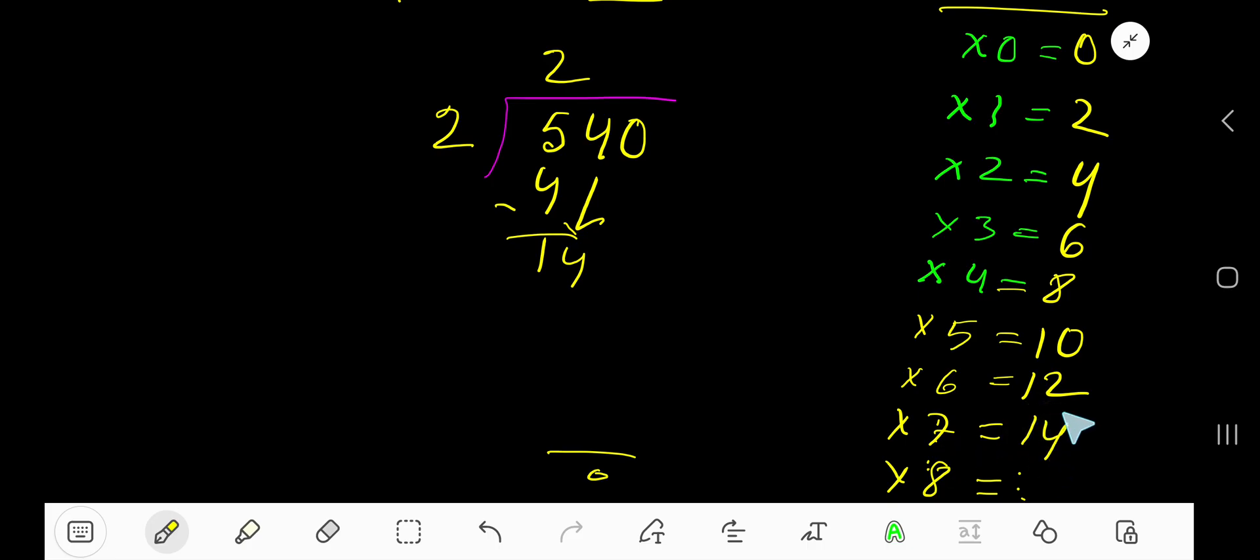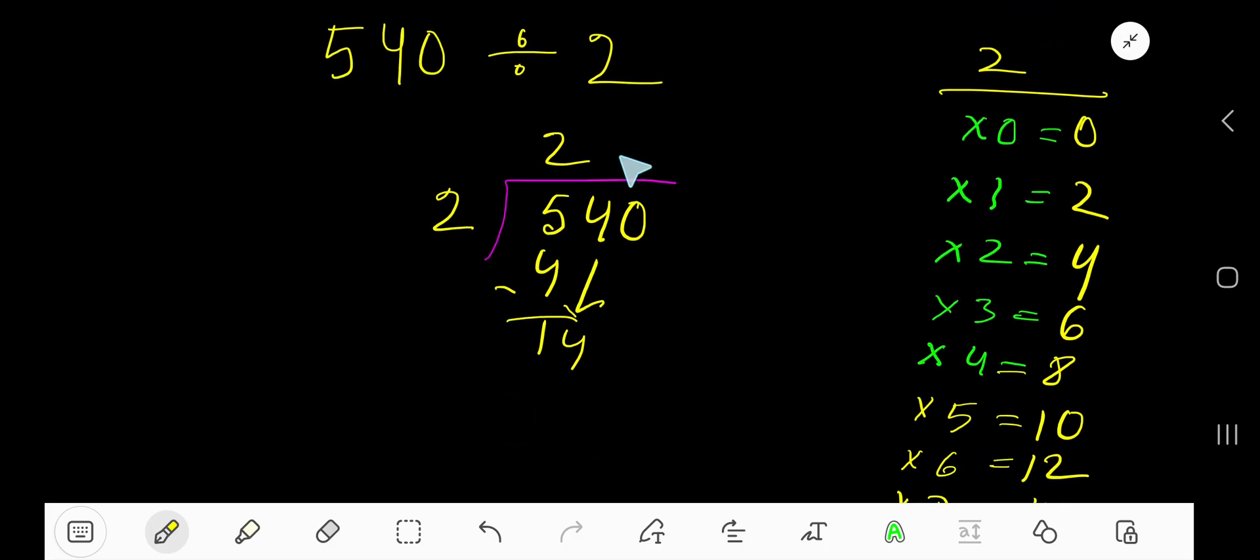2 times 7, just add 2 with this 12: 12 plus 2 is 14. So 2 goes into 14 seven times, right? 7 times 2 is 14. Subtract, you're getting 0. Bring down this 0. Now 2 goes into 0 how many times?